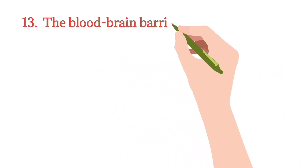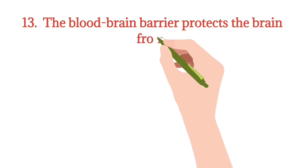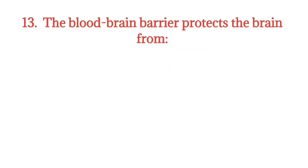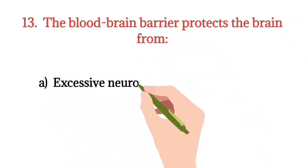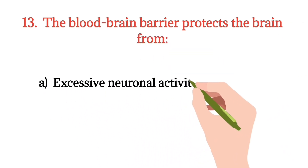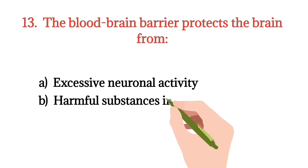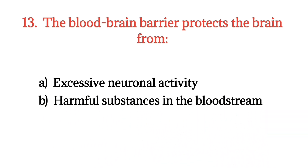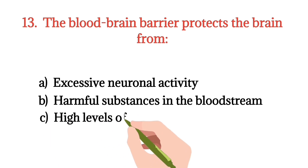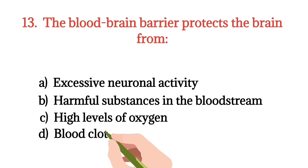MCQ number 13. The blood-brain barrier protects the brain from? Option A: Excessive neuronal activity. Option B: Harmful substances in the bloodstream. Option C: High levels of oxygen. Option D: Blood clotting. The right option is Option B.